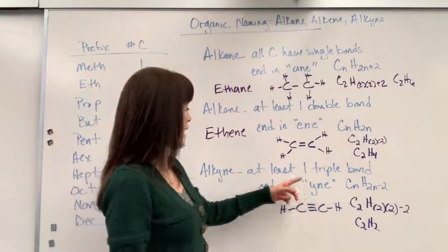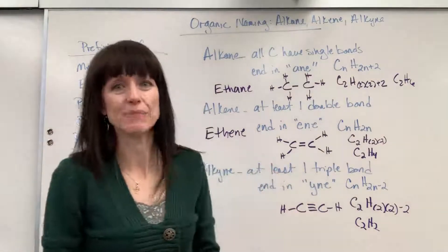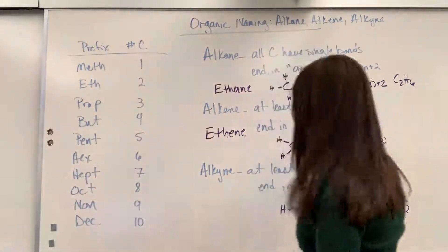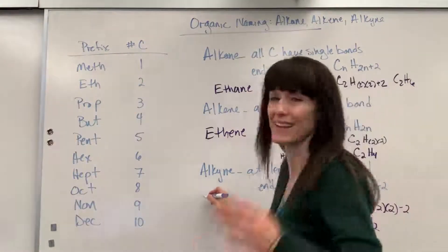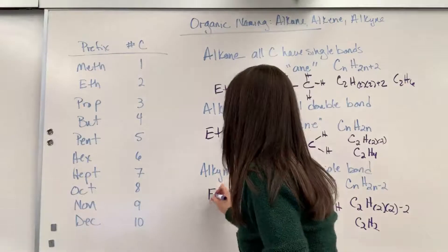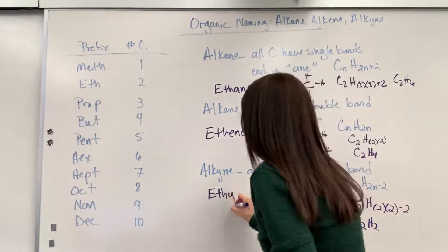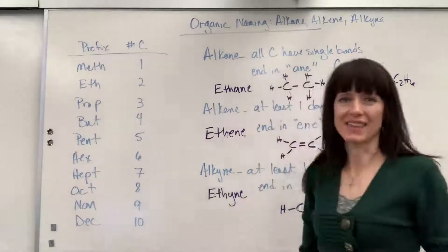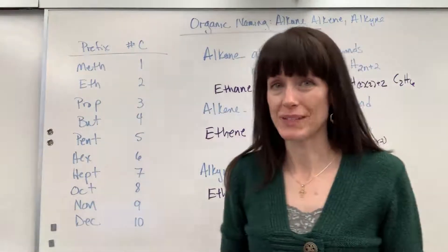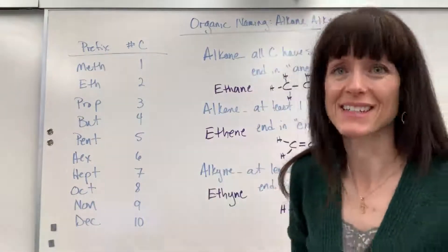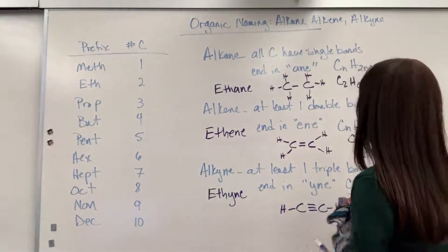The ending for alkyne is the Y-N-E, so let's name this. I've got my two carbons, of course. That's going to be eth for two carbons. Because I have a triple bond, this will be called yne. That is ethyne. So really simple example there. Let's extend it just a little bit.